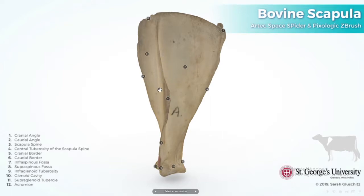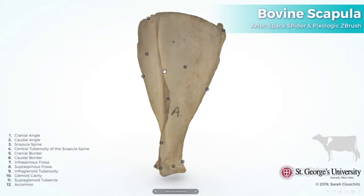We can determine the side of a scapula by holding the scapula in such a way that the spine is facing toward your eyes. If the supraspinous fossa is at the left side, then it is said to be a left scapula. If the supraspinous fossa is at the right side, then it is said to be a right scapula. Moreover, we can determine the side of a scapula by the spine.